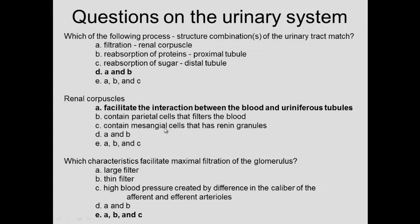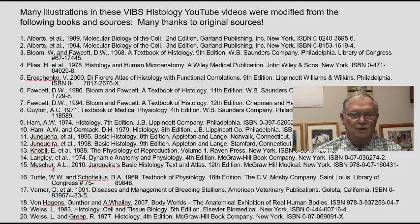Do renal corpuscles contain mesangial cells with renin granules? No — the renin granules are located in the smooth muscle cells of the afferent arterioles. Which characteristics facilitate maximum filtration of the glomerulus? Large filter — yes. Thin filter — yes. High blood pressure created by the difference in caliber of the afferent arteriole — yes. The answer is E: A, B, and C.